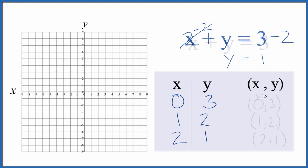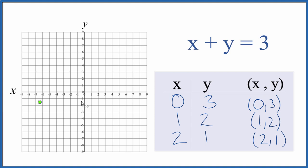So these are the points that we'll graph for x plus y equals 3. We find x is 0, y is 3. So here's x is 0, y is 3. That's our y-intercept there. Then we go to x is 1, y is 2.